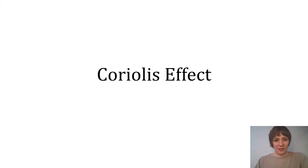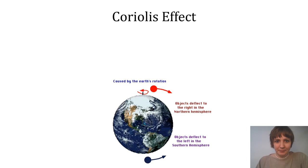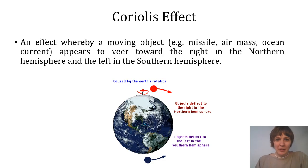This video lecture is to introduce you to the Coriolis effect. The Coriolis effect is an effect whereby a moving object like a missile, air mass, or ocean current appears to veer to the right in the northern hemisphere and the left in the southern hemisphere.